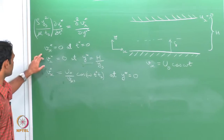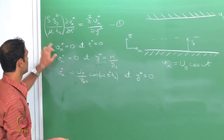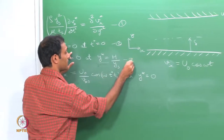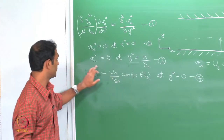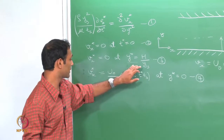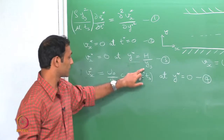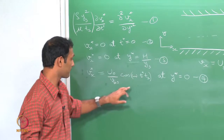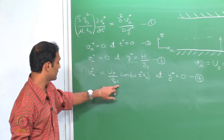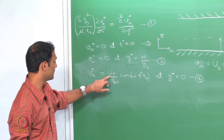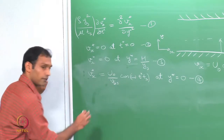Looking at boundary conditions 3 and 4, using order of magnitude analysis we can choose ys = h so that y* goes from 0 to 1. From there we see directly a velocity scale vxs = u0, so that vx* goes from 0 to order of 1. These choices define case 1.